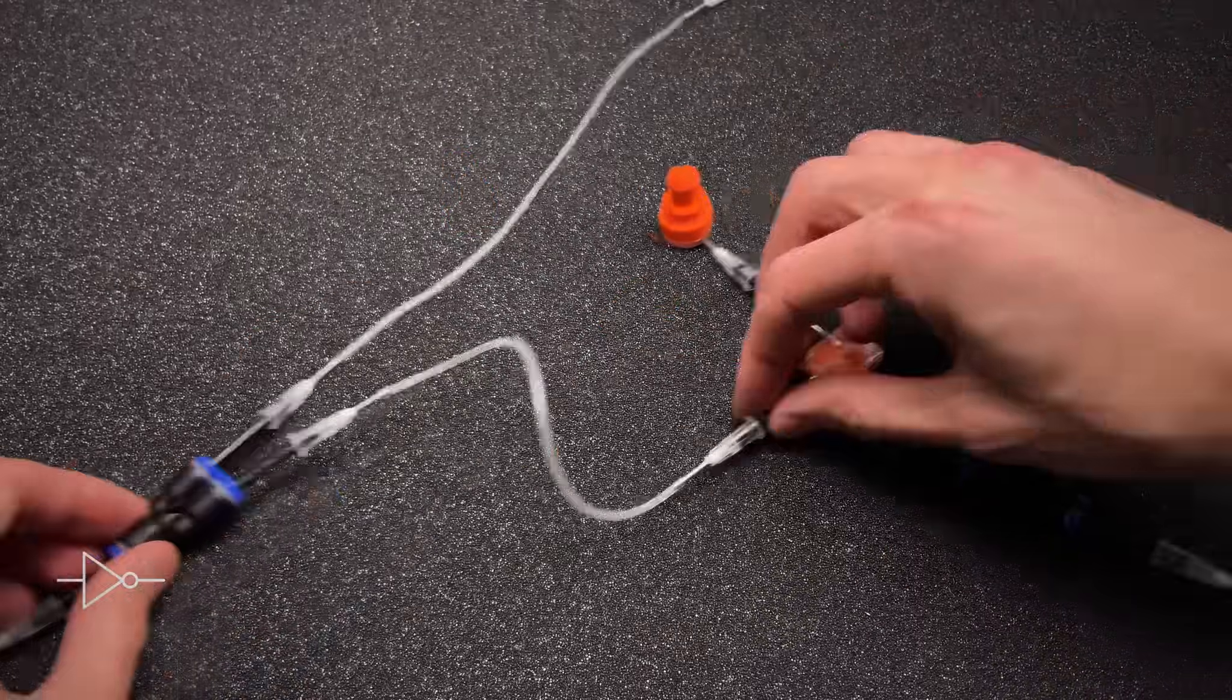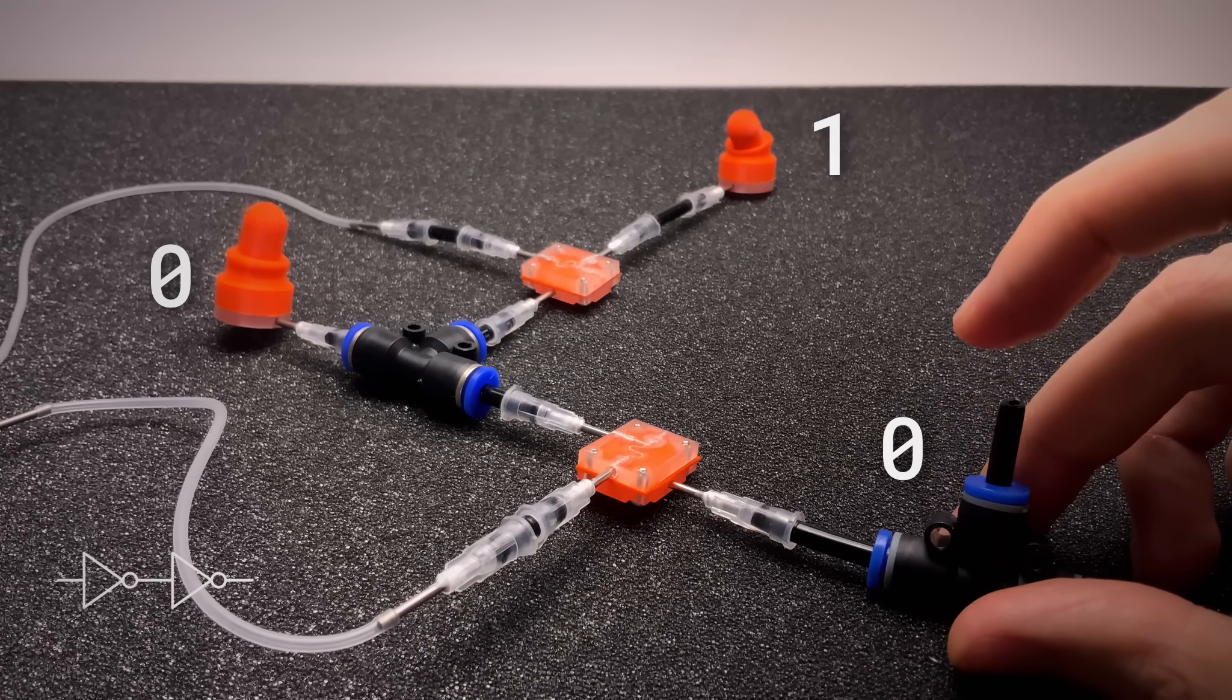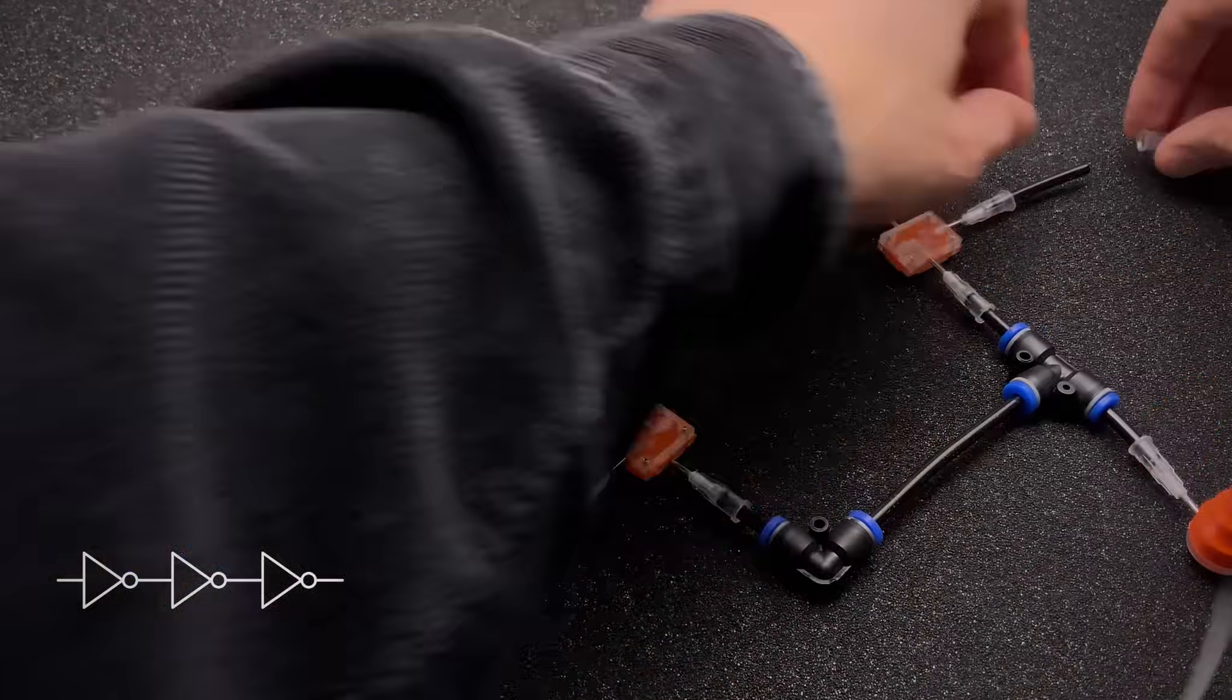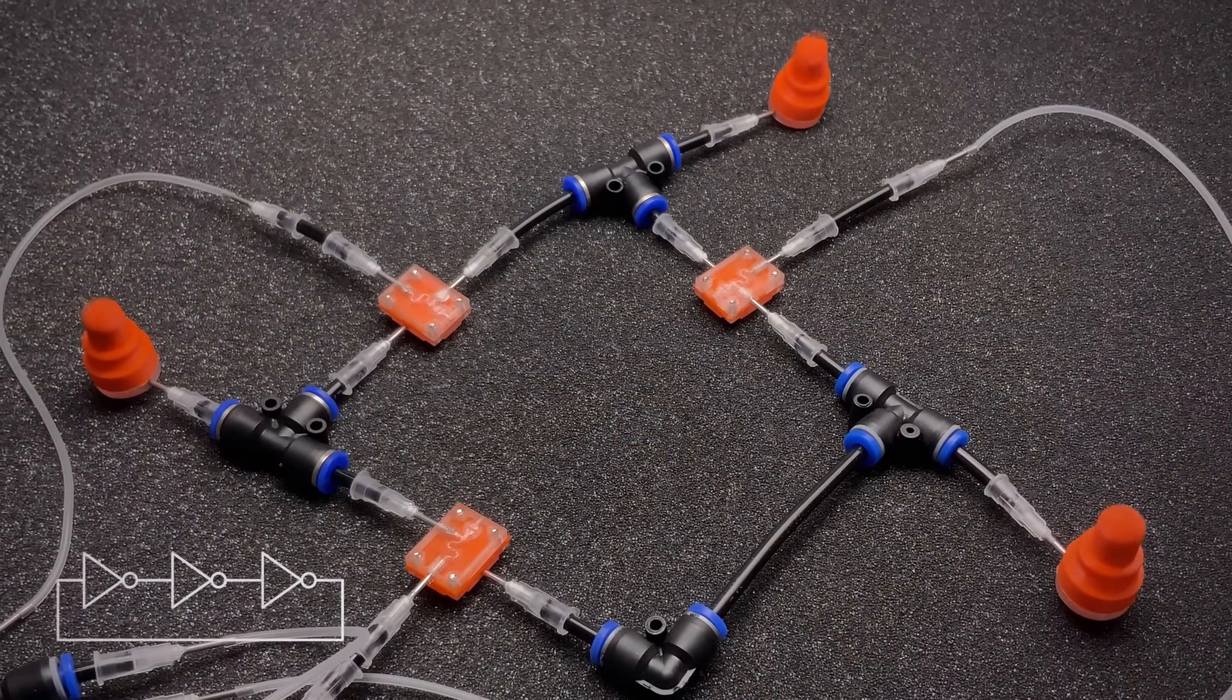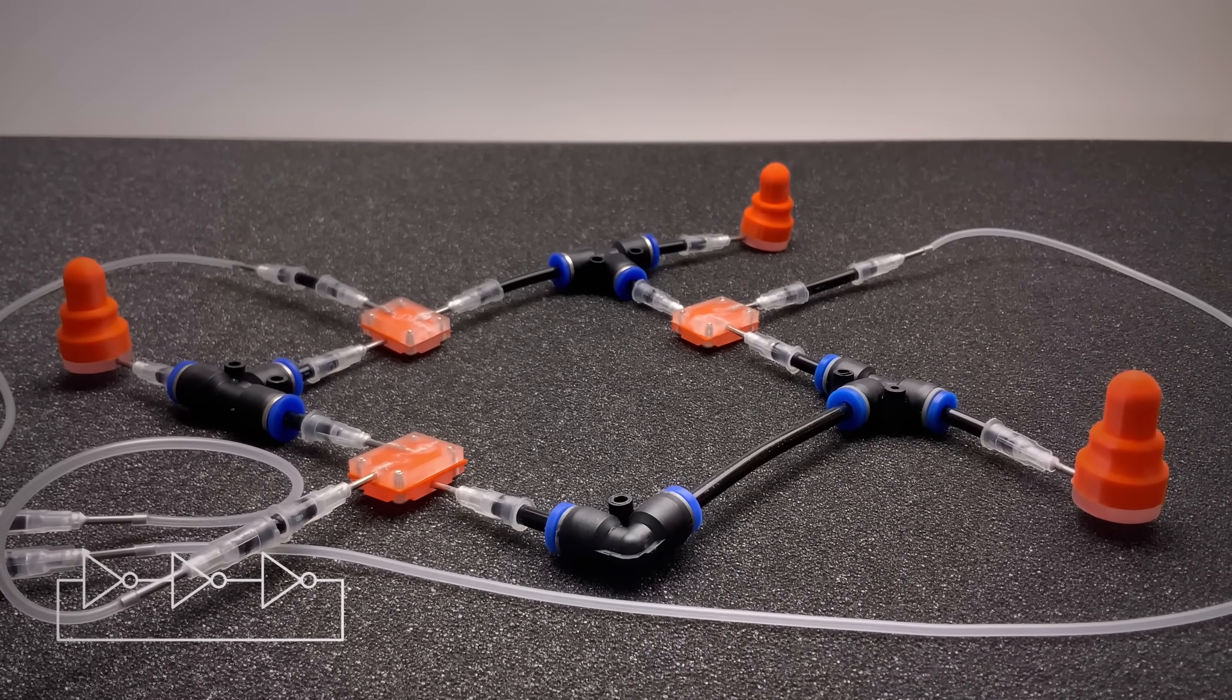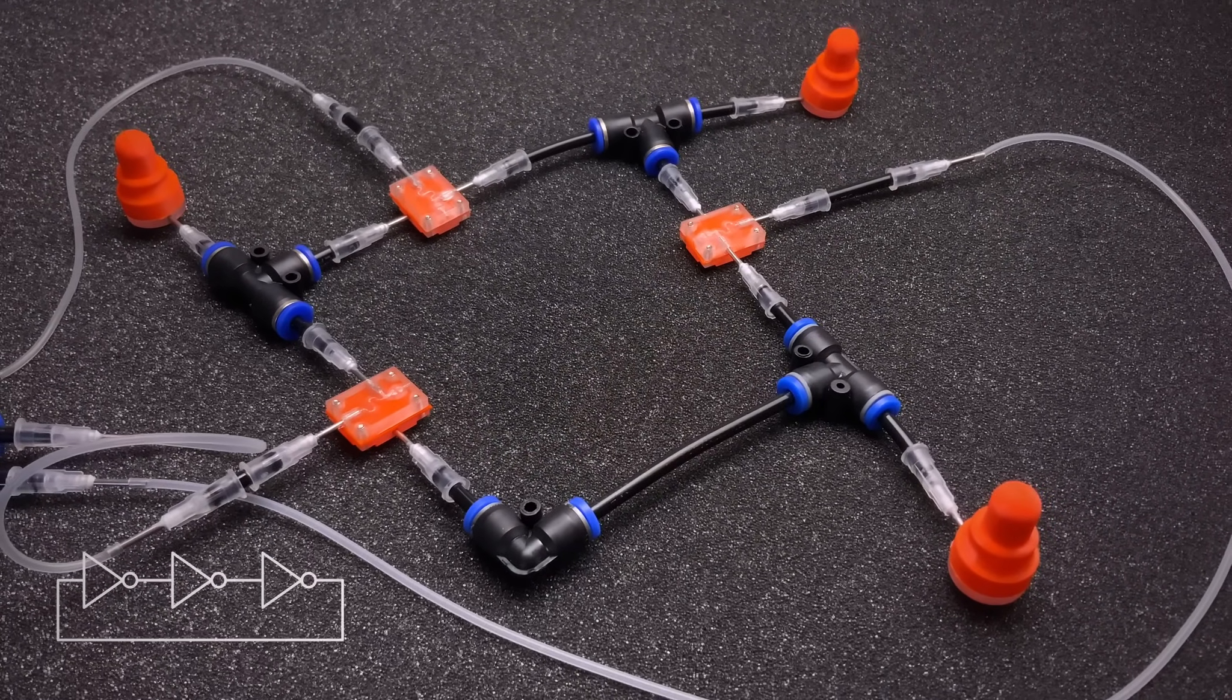What happens if we chain two inverters together? One muscle relaxes, then the other contracts. The signal propagates. Now let's add a third inverter, connecting the loop back onto itself. The muscles start to move all on their own. The circuit comes alive. A little shy at first, but yes, it's oscillating.